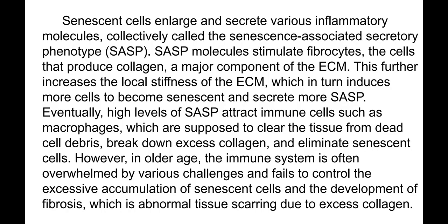Senescent cells enlarge and secrete various inflammatory molecules, collectively called the senescence-associated secretory phenotype, or SASP. These molecules stimulate fibroblasts — the cells that produce collagen, a major component of the extracellular matrix — further increasing its stiffness, which in turn induces more cells to become senescent and secrete more SASP. Eventually, higher levels of SASP attract immune cells such as macrophages, which are supposed to clear tissue from dead cell debris, break down excess collagen, and eliminate senescent cells.